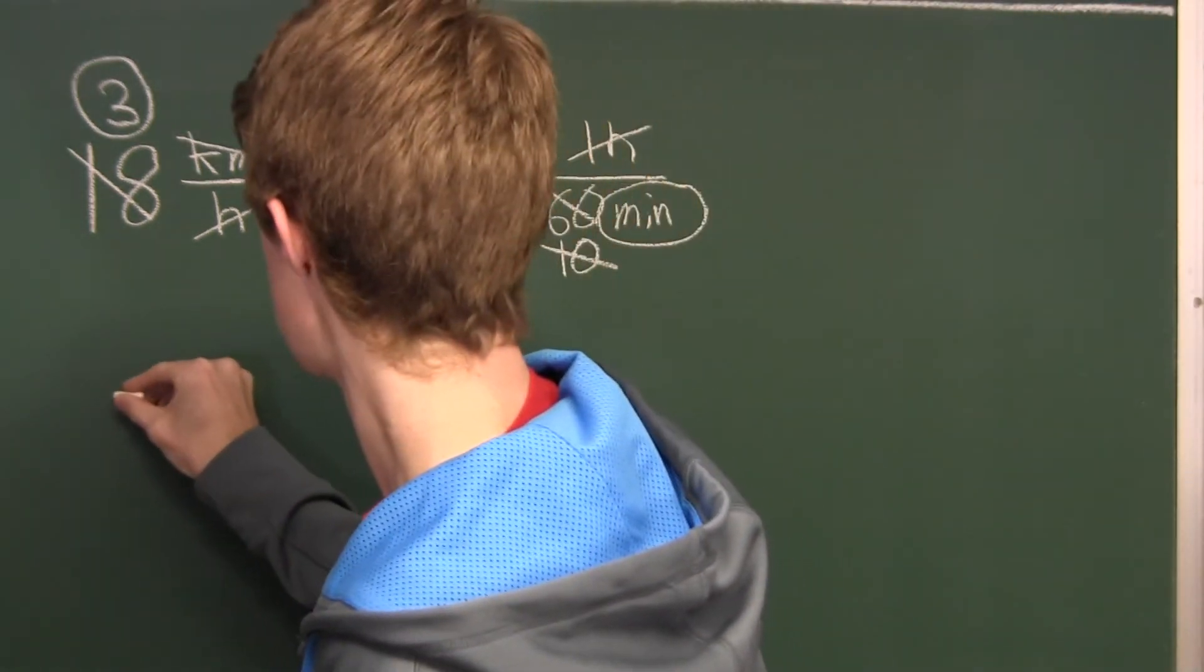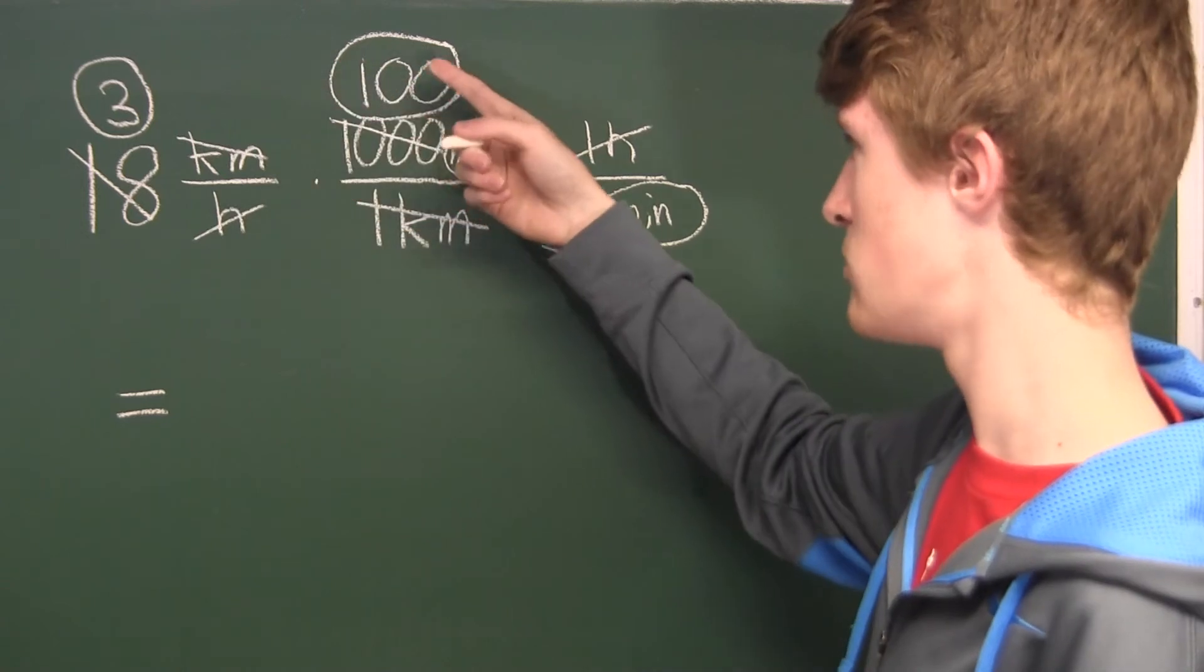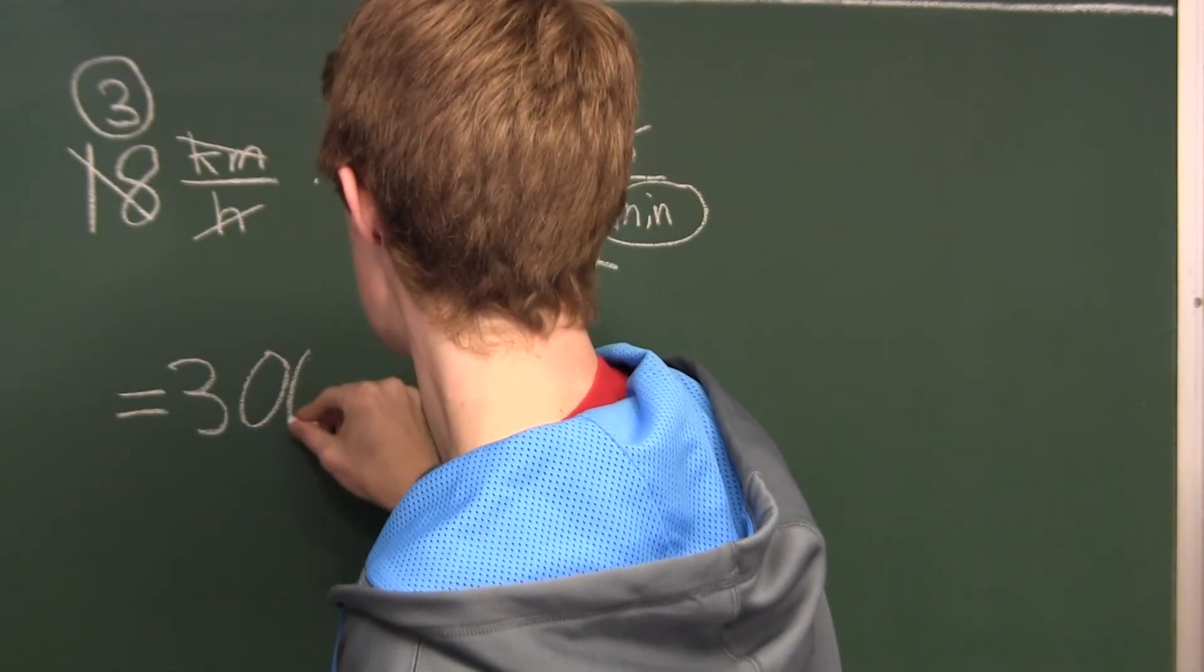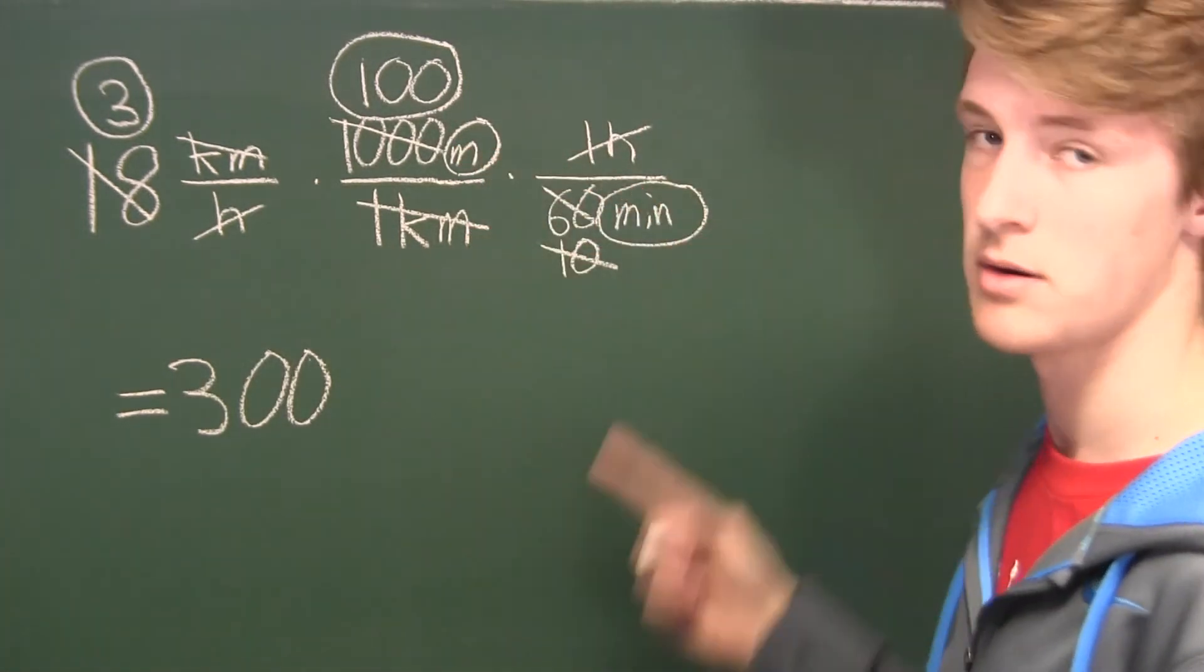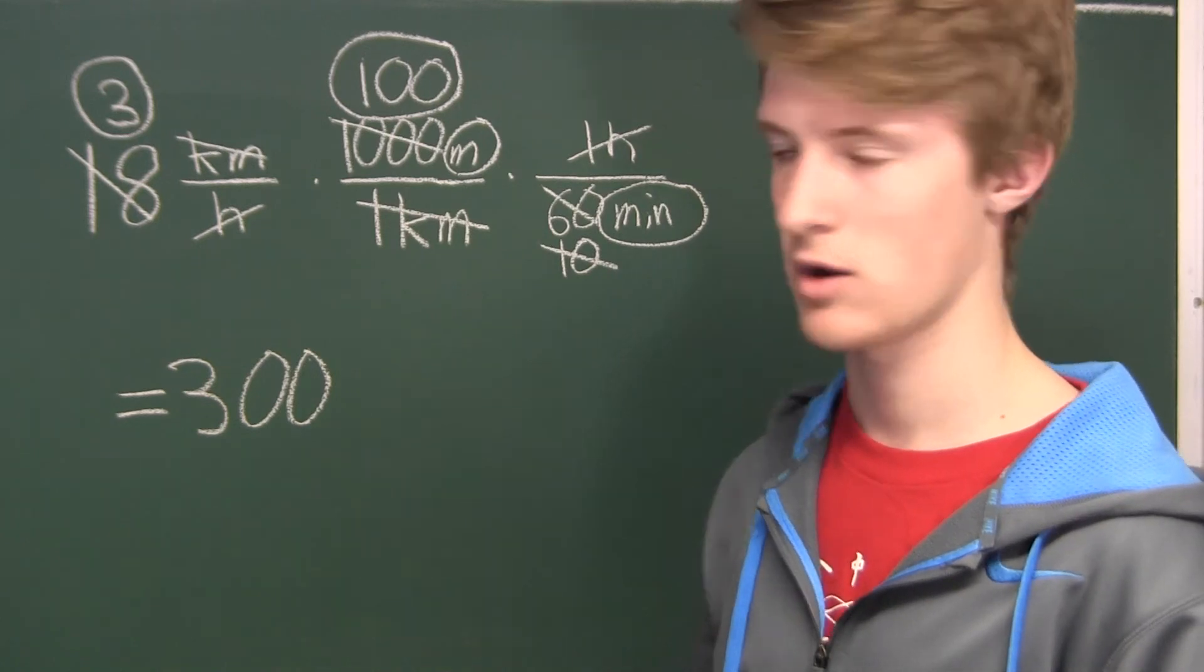So 3 times 100, since they're in the numerator, is 300. And then we have meters over minutes, which is exactly the conversion that we wanted from the question.